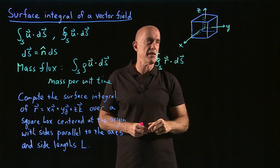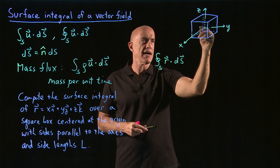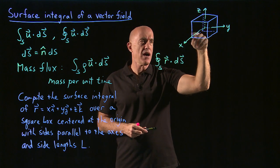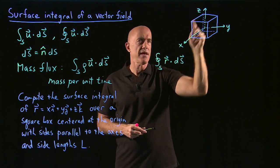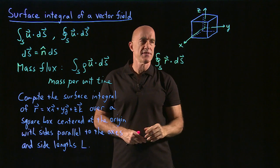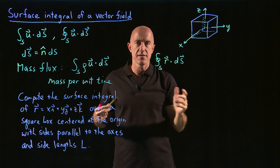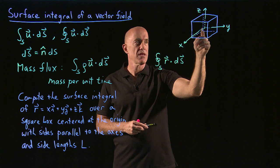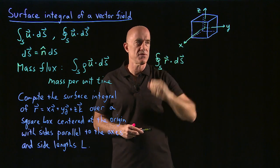They're all the same, right? So the value of r dot ds calculated on each of these six faces will all have the same value, just by the symmetry of this box and the symmetry of the position vector.